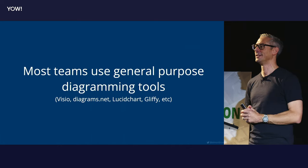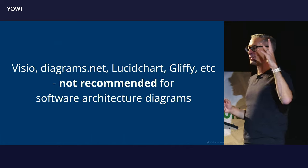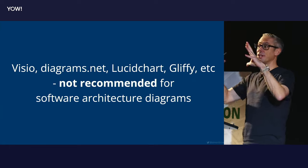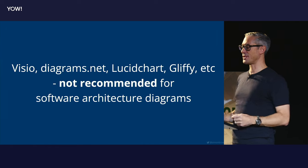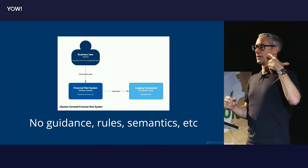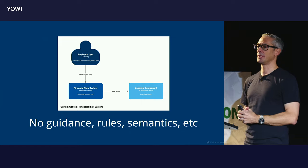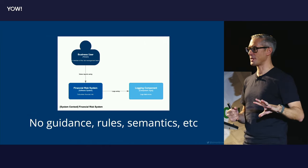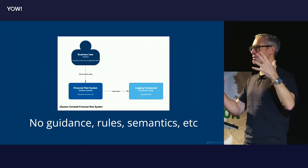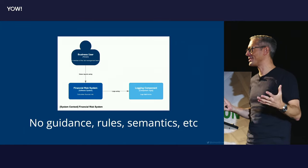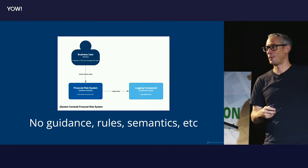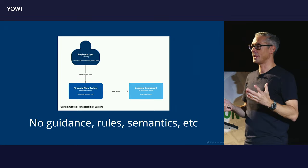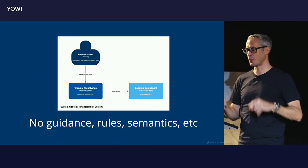I don't recommend these tools for crafting up software architecture diagrams. They're just general purpose tools. With a system context diagram, it generally only shows people and software systems. But because Visio does not know you are crafting up a C4 system context diagram, you can add more boxes and components and other things that don't exist in the C4 language or grammar — and the tool won't stop you doing that.